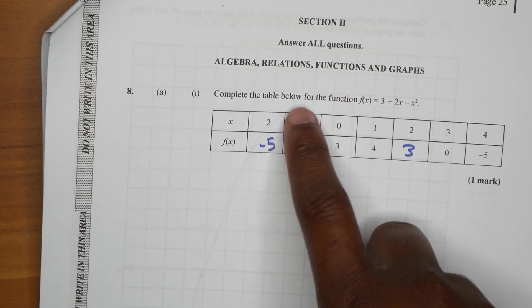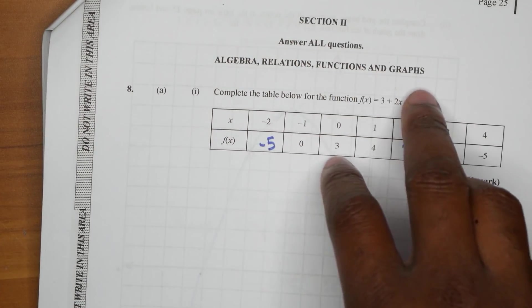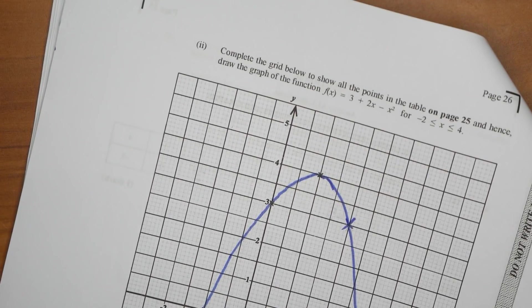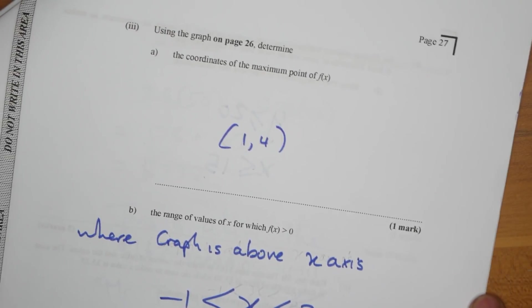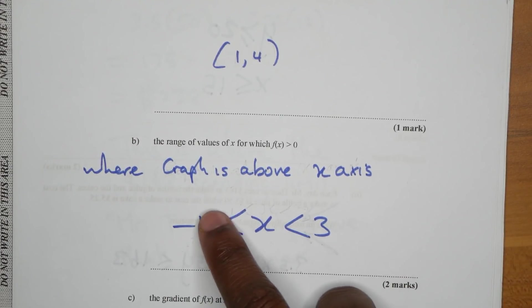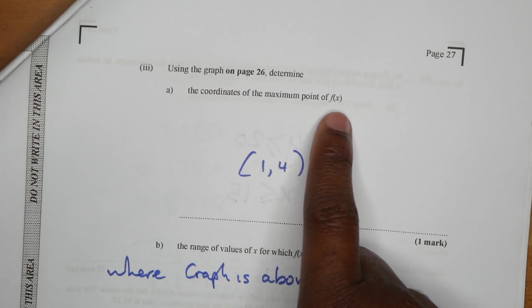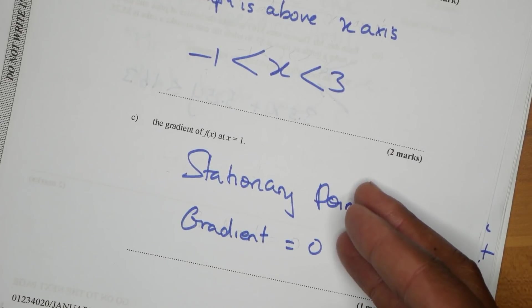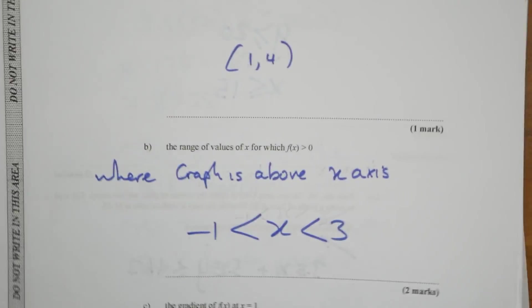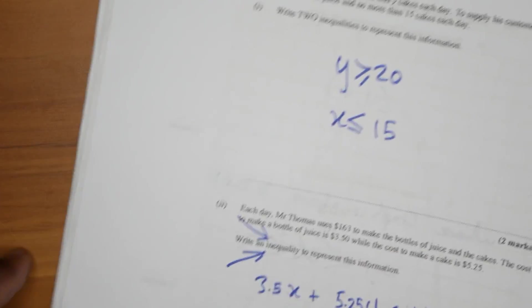Section Two — algebra, relations, functions, and graphs. A quadratic graph came in here. You use the graph to find the maximum point — the coordinates at the maximum point. Then they ask you for when it's greater than zero, so you use the graph for that. Then they ask you about the gradient at the maximum point — it's zero, because it's just zero at the maximum point.